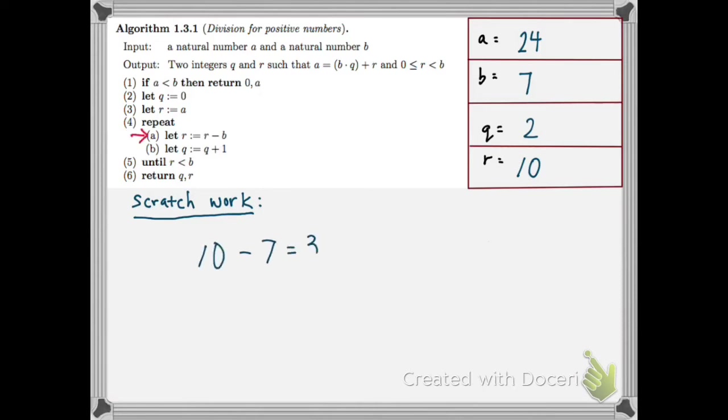I compute 10 minus 7. That's R minus B. And I get 3. That's my new value for R. I compute Q plus 1. That's 2 plus 1 is 3. And that's my new value for Q.